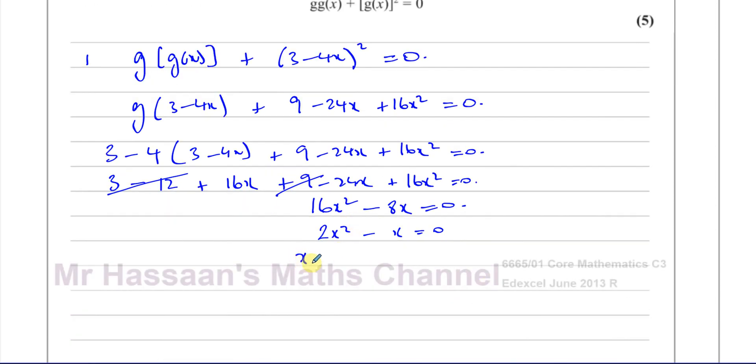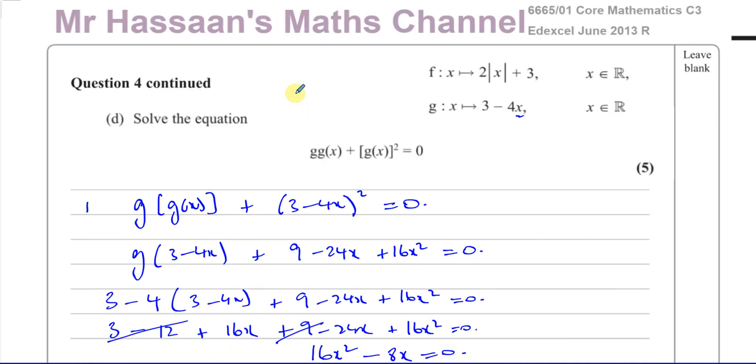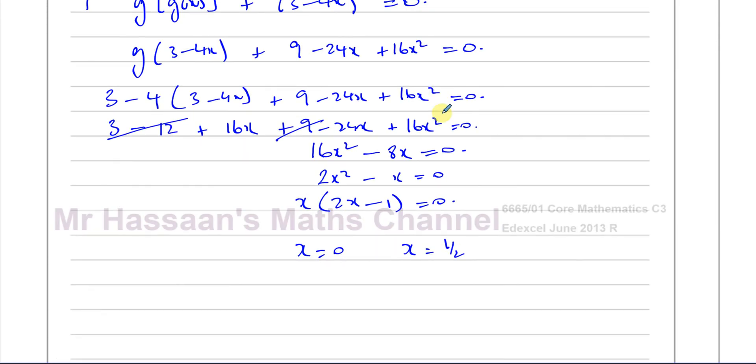To solve this, we can take x as common. x times 2x minus 1 equals 0. So either x equals 0 or x equals 1 half. 2x minus 1 equals 0. 2x equals 1. x equals 1 half. So we have now the solutions to this equation.